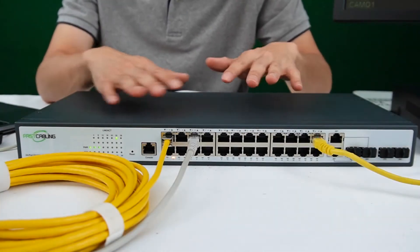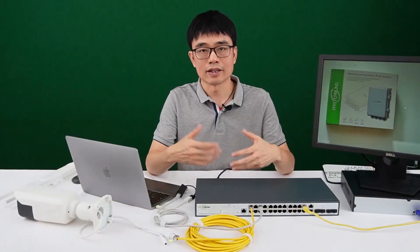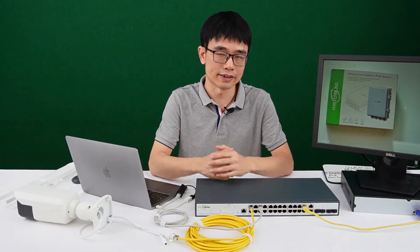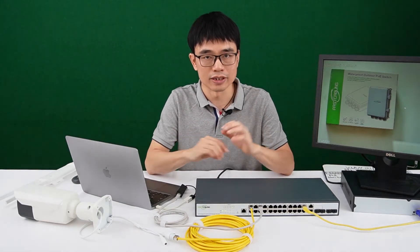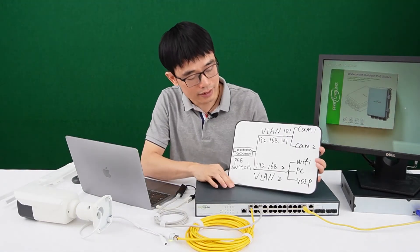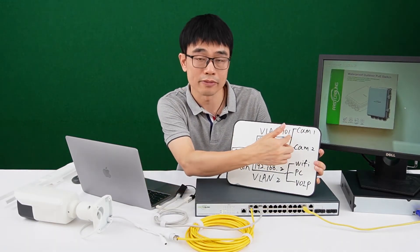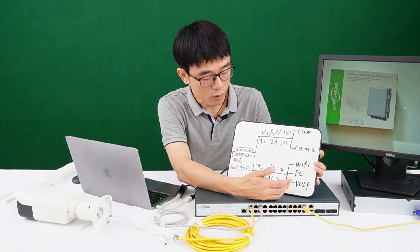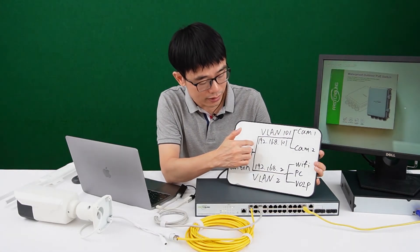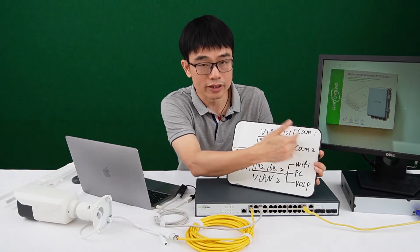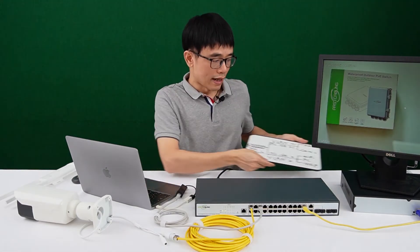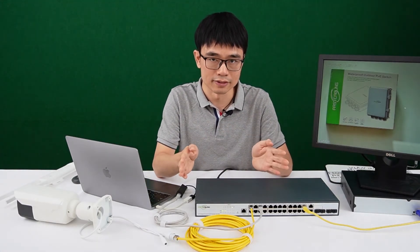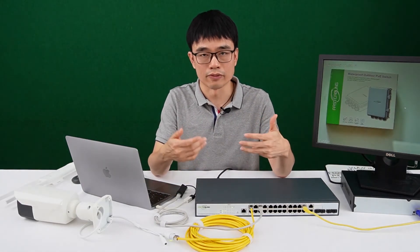This is a simple approach using the L2+ managed PoE switch, which has a routing function. So we can not only use the VLAN to separate the camera system from the existing network, but we can also set an IP address for each VLAN. In this setup, we're using VLAN 101 for all the cameras and the recorder, and the default VLAN for Wi-Fi, PC, and VoIP phone. We can assign an IP address like 192.168.101.x for all the cameras and the recorder — so when we see that IP range, we know it belongs to the camera system, and the rest belong to VoIP phones and access points.